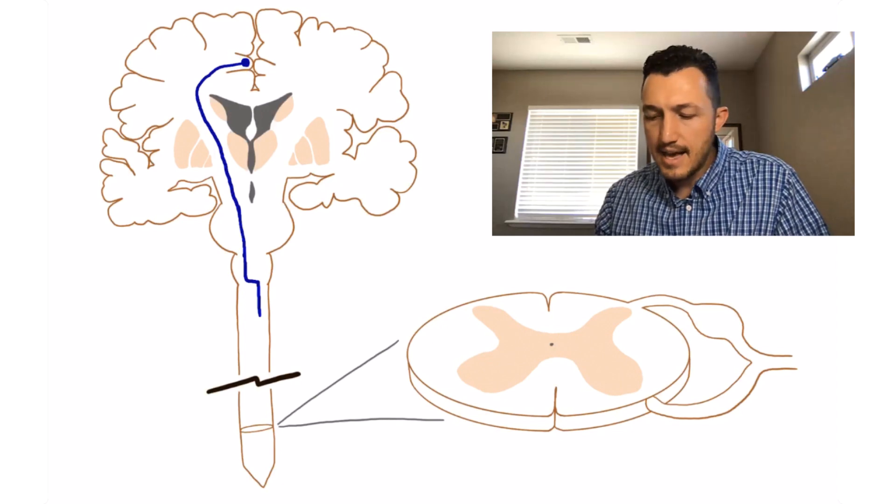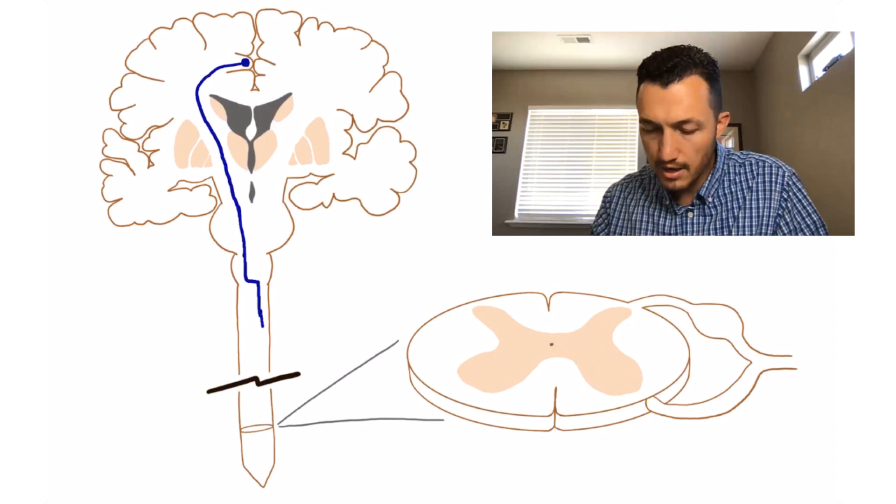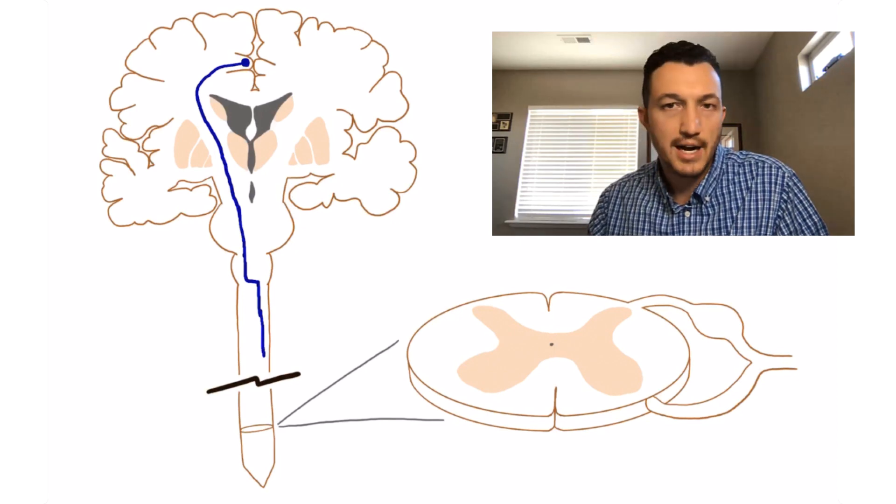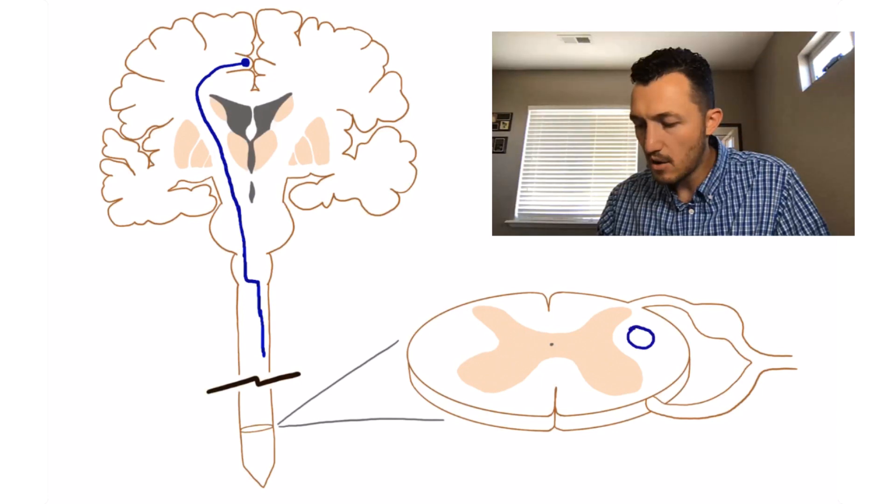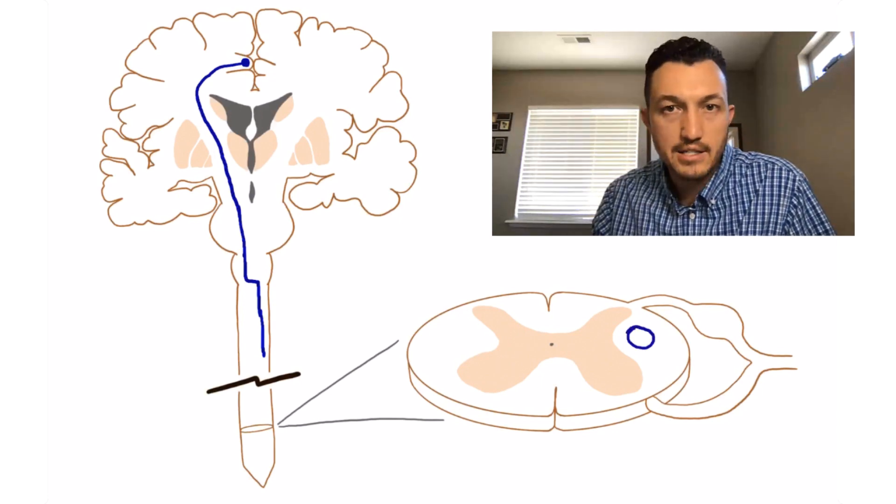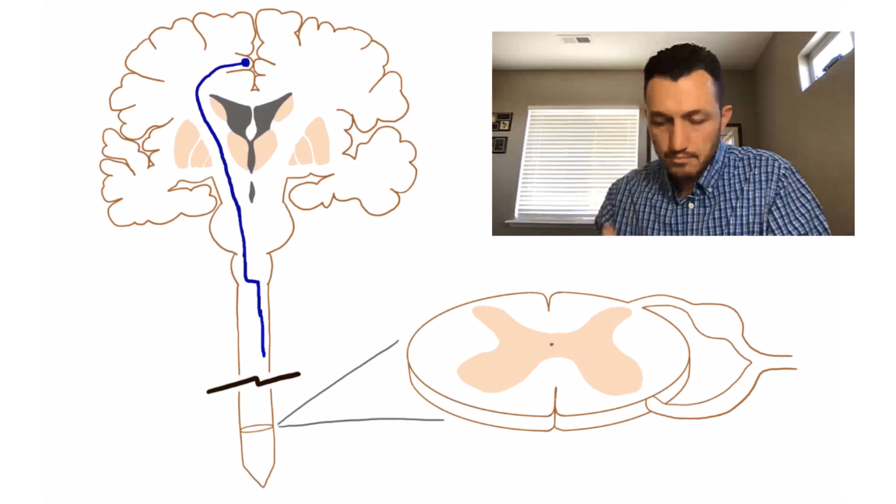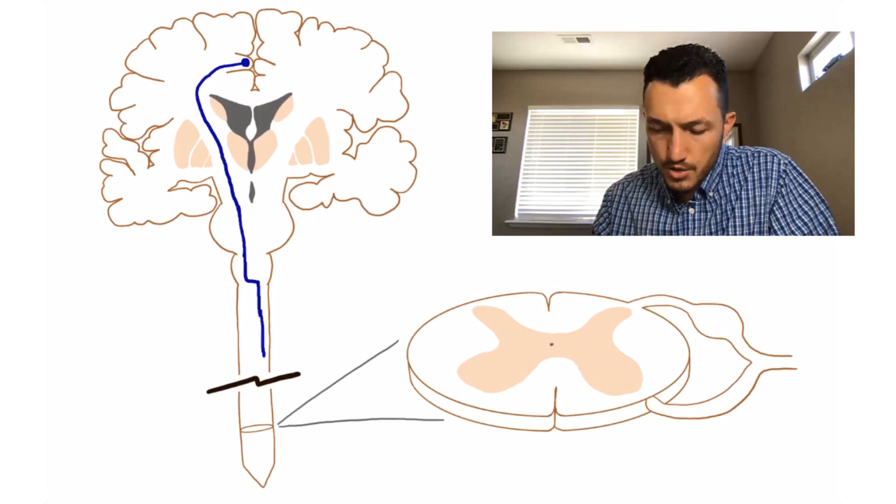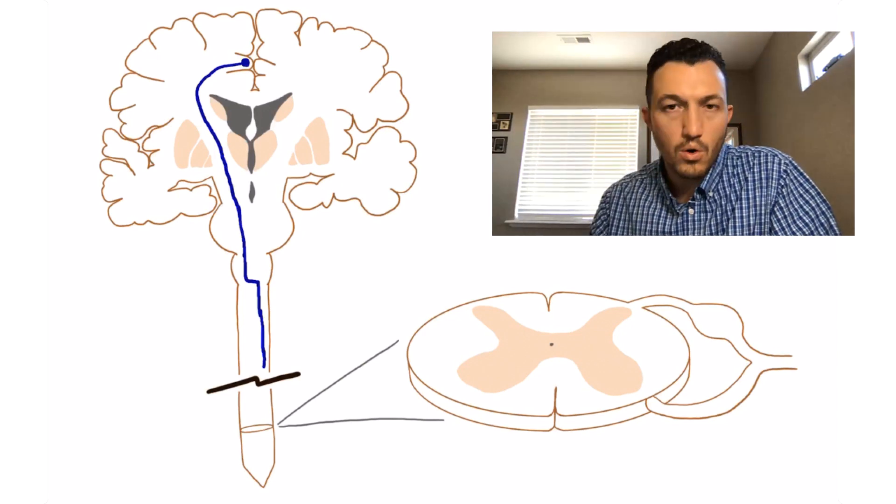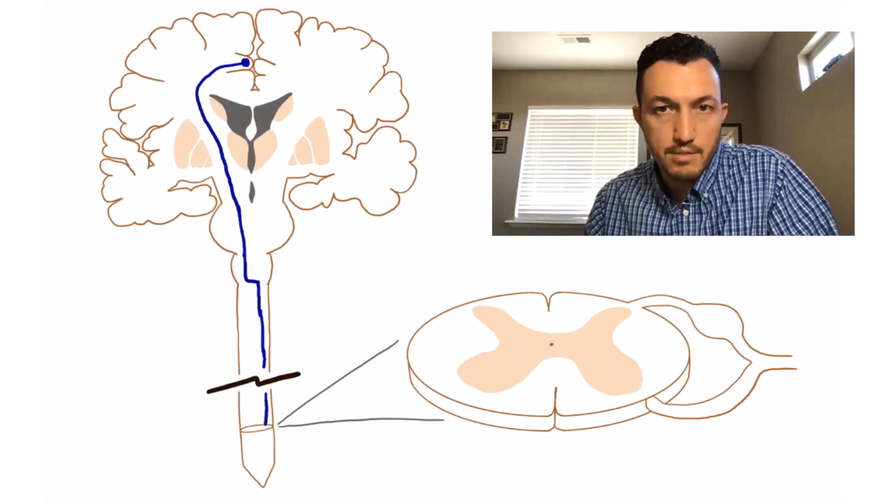And as that main part of the corticospinal tract descends down that contralateral spinal cord, it actually is traveling kind of out here in the white matter. If this is a slice of our spinal cord, it's out here on the lateral aspects of the white matter of the spinal cord traveling down. And so remember, we're heading down towards our foot, so it's going to go through the cervical region of the spinal cord, down through the thoracic region of the spinal cord, and eventually, we're going to get down here into the lumbar region of the spinal cord.